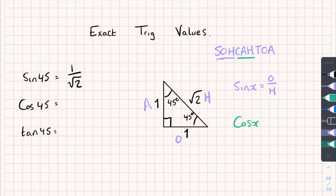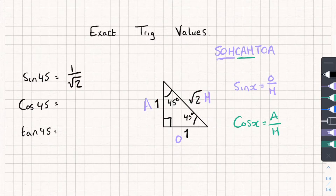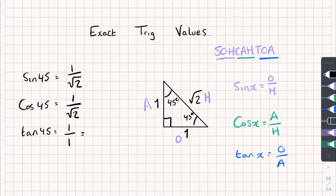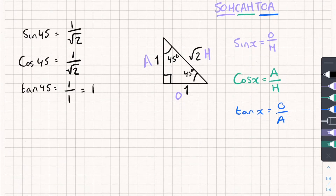For cos 45, cos of the angle equals adjacent divided by hypotenuse. The adjacent is 1 and the hypotenuse is root 2, so cos 45 is also 1 over root 2 — the same as sine 45. Finally, tan 45: tan of the angle is opposite divided by adjacent. The opposite is 1 and the adjacent is 1, so tan 45 equals 1 divided by 1, which gives us 1.